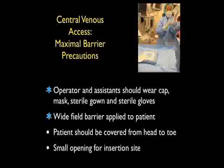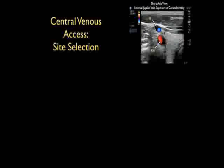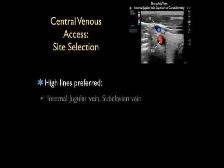The patient should be covered from head to toe with this wide field barrier, with only a small opening for the insertion site of the central line. The fourth main step within the IHI guidelines is adequate attention to site selection for placement of the central venous catheter.